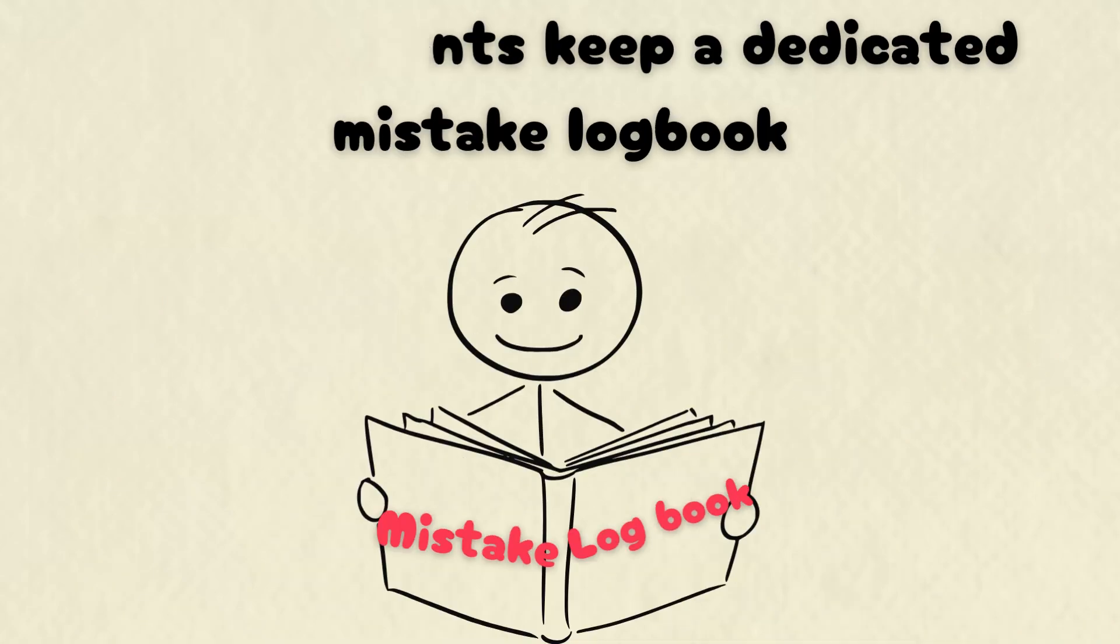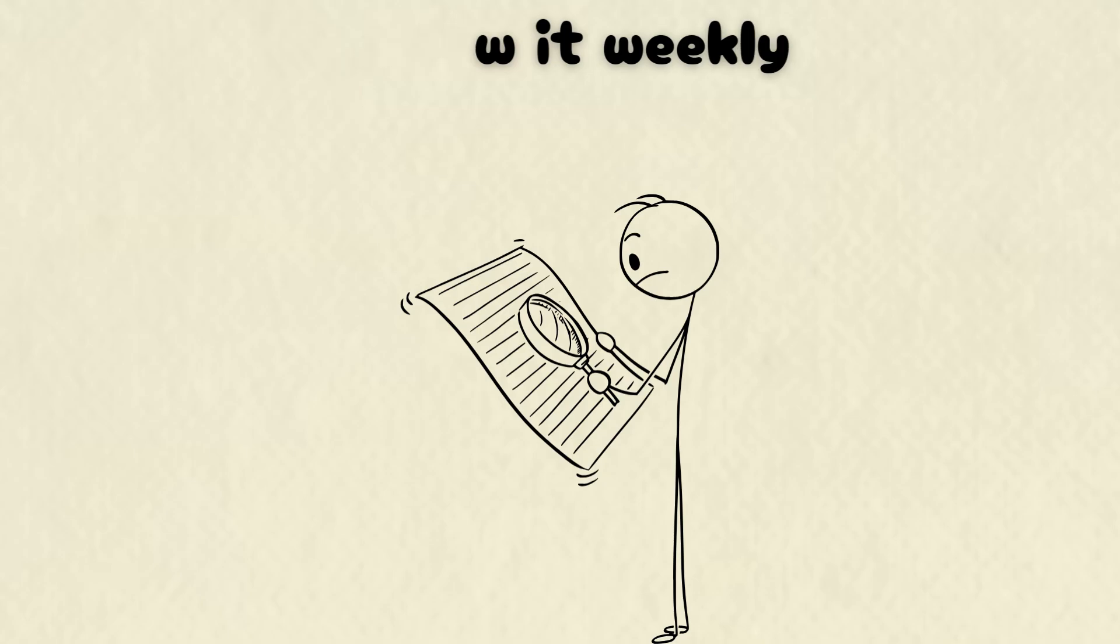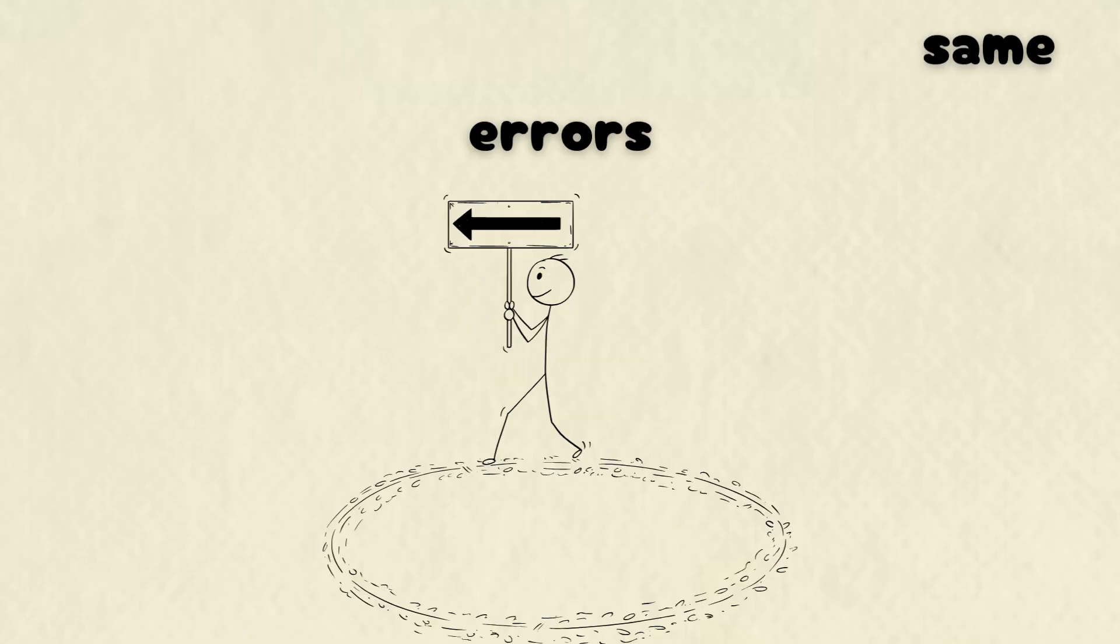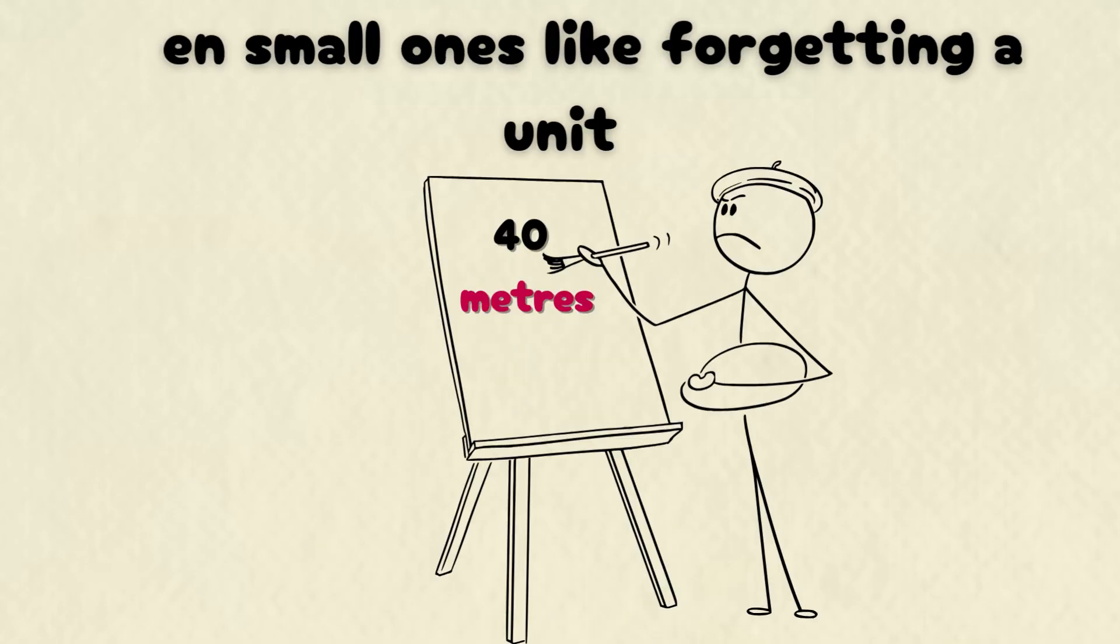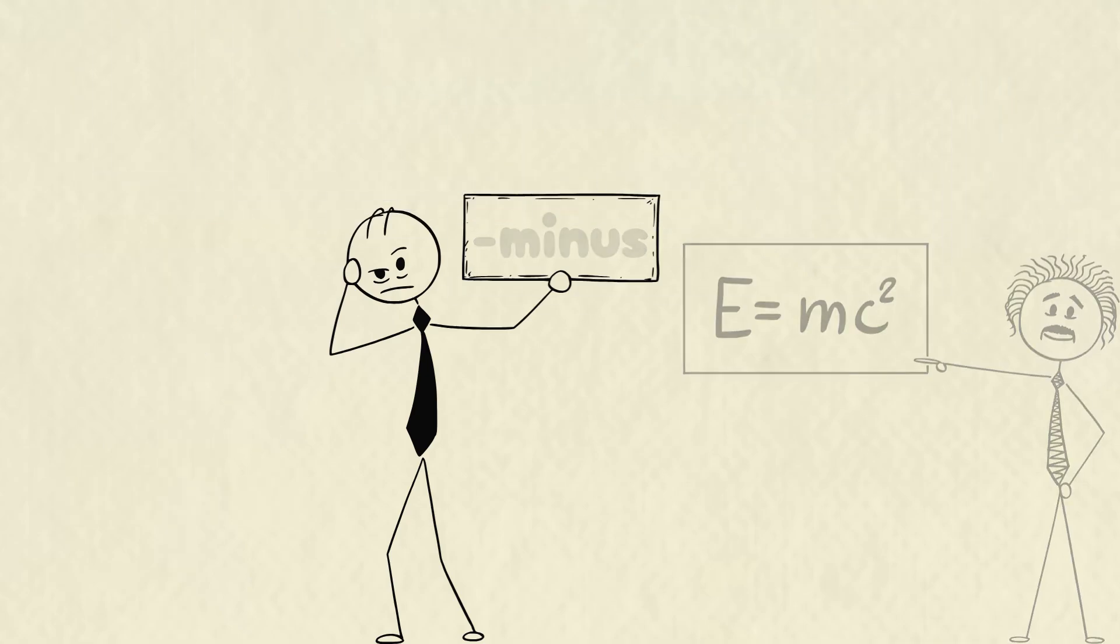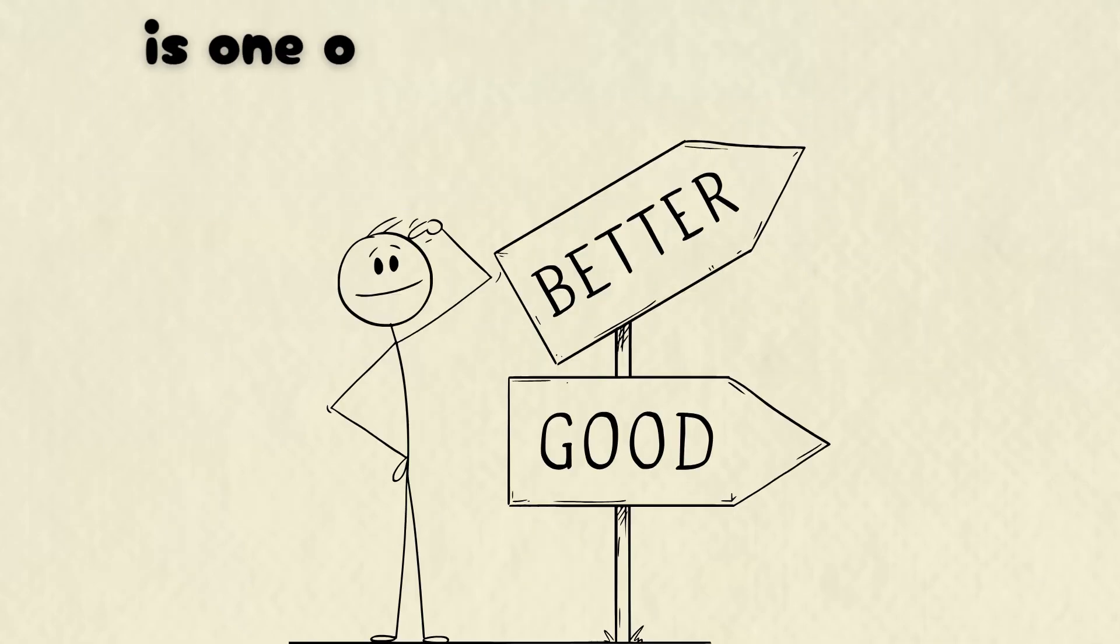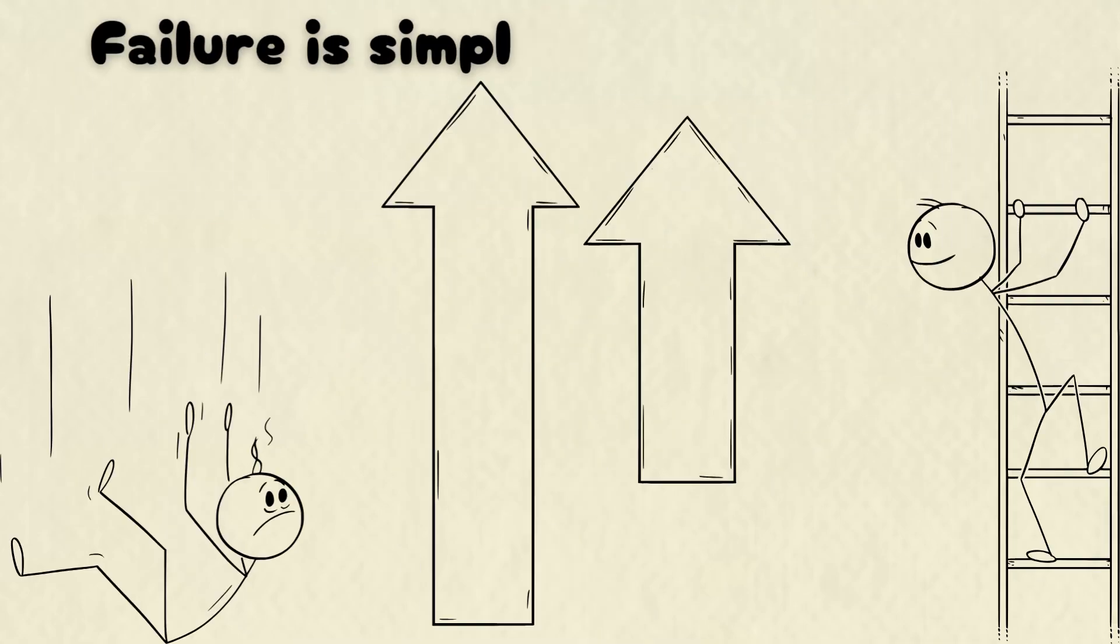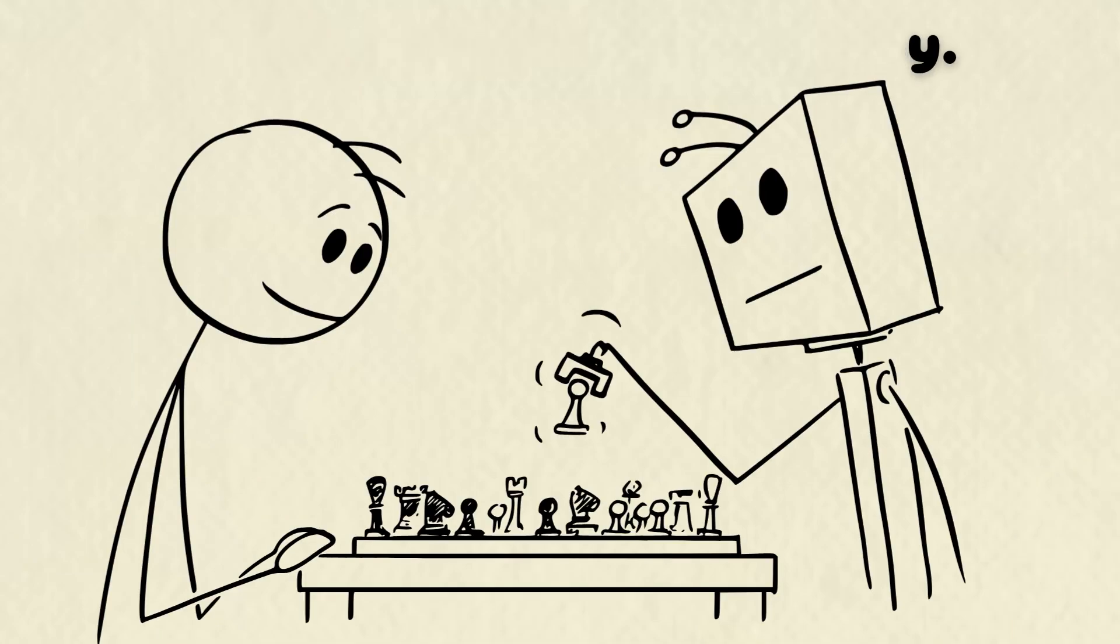Asian students keep a dedicated mistake logbook, review it weekly, and ensure they never repeat the same errors. Even small ones like forgetting a unit, a plus or minus sign, or a formula. Facing mistakes head on is one of the fastest ways to improve. Failure is simply the opportunity to begin again, this time more intelligently.